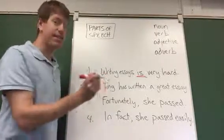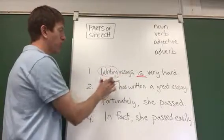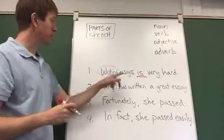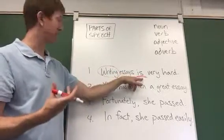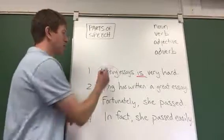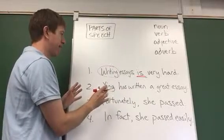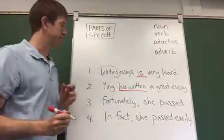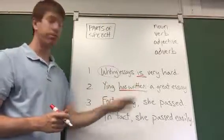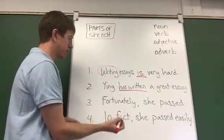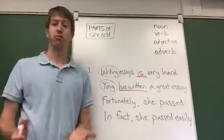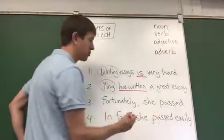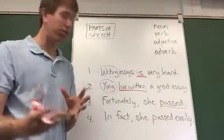Writing essays. So the subject of this sentence is actually 'writing.' Essays tells you what we're writing, but 'writing' is the subject. So writing is hard, not that essays is hard. You can tell because 'essays' is plural, but the verb 'is' goes with a singular subject — so you know 'writing' has to be the subject. So we have subject and verb. Let's go on to number two and identify subject and verb. I would say all of 'has written' is the verb — it's a perfect verb. In English, subjects come before verbs, almost always.